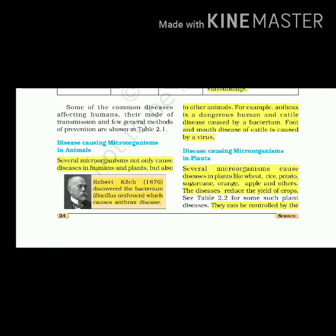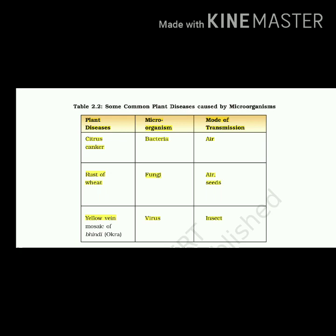Plant diseases can be controlled by use of certain chemicals which kill the microbes. Some disease-causing microorganisms in plants include: Citrus canker - bacteria; Rust of wheat - fungi, spread through air; Yellow vein mosaic of bhindi (okra) - virus, spread by insects.